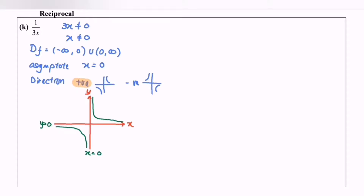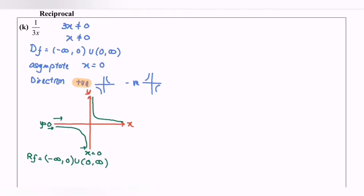Based on the diagram or the graph, we have to determine the range. So the range for this case will start from negative infinity until 0, where 0 is not included, union 0 until positive infinity.